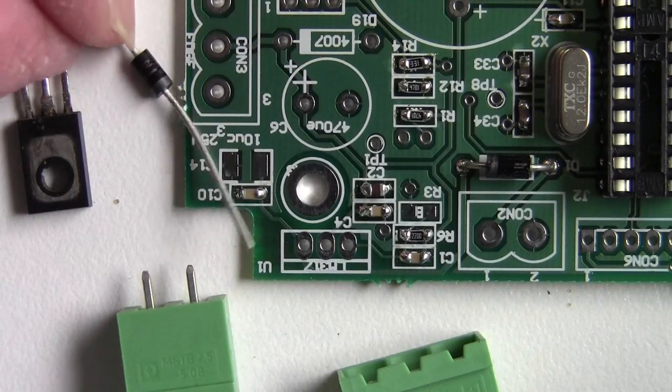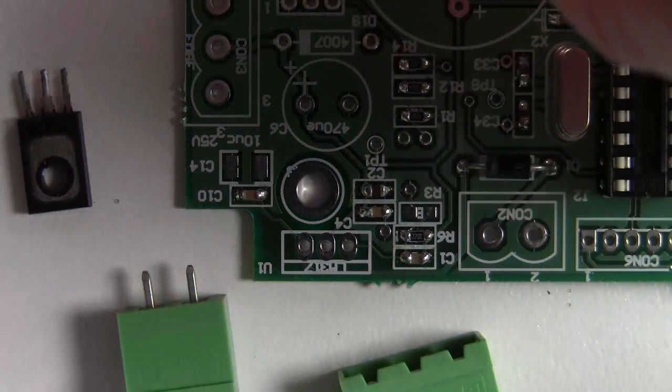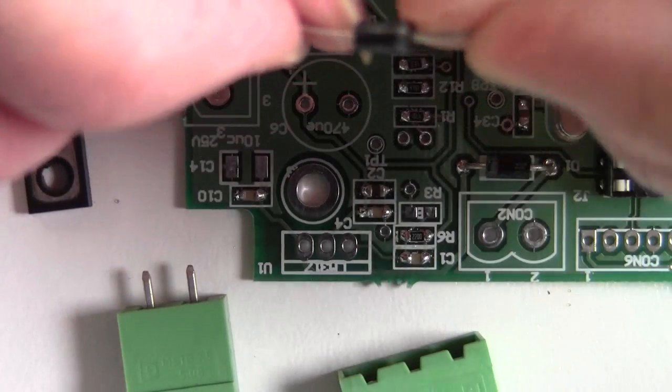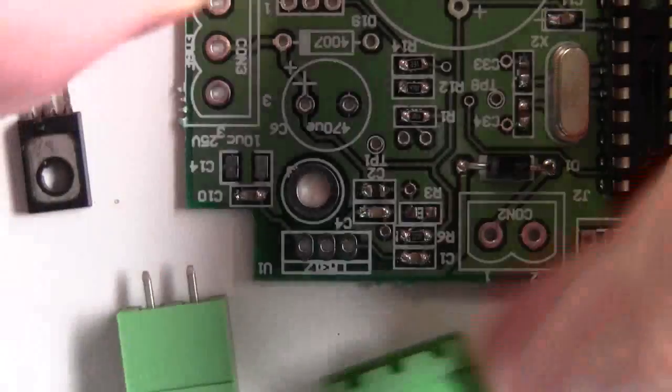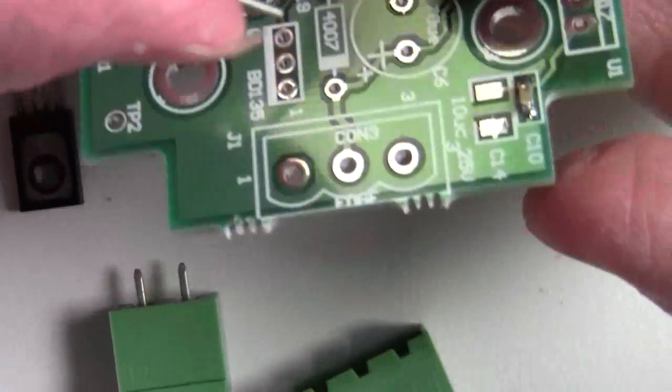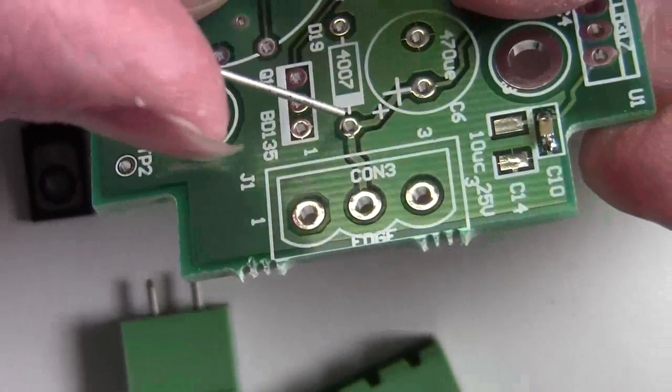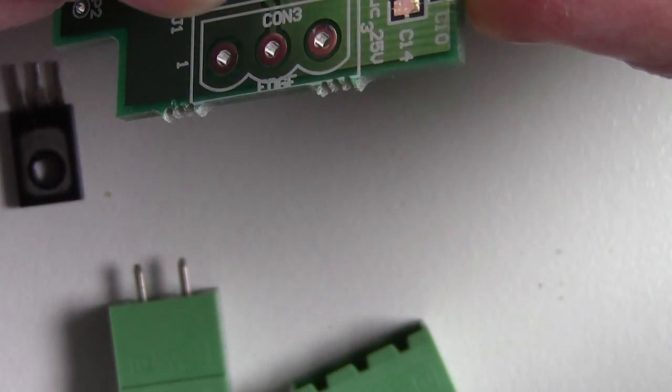This is just a short video on how to solder through-hole parts. So I've got a diode I'm going to solder. Now bend the leads to the right pitch, make sure you get the polarity right, the cathode and all that. Put that in there.